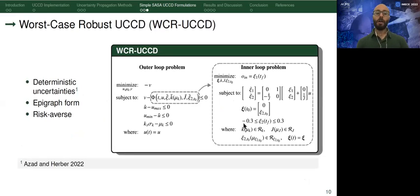On the other hand, we have also the worst-case robust UCCD that requires a deterministic representation of uncertainties. This formulation here is shown in epigraph form. That is done by introducing a new variable as the objective function and introducing a new constraint. Notice that the inner loop problem entails the satisfaction of all of the analysis type constraints. And all of the uncertainties here belong to their associated uncertainty sets that are once again represented deterministically.